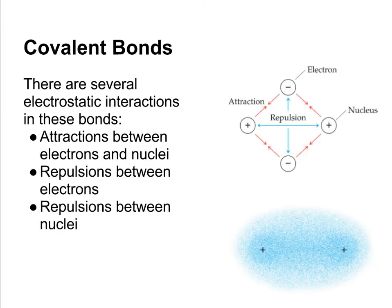Moving on to covalent bonds, there are several electrostatic interactions going on. In this representation, we've got two atoms that are starting to bond together. We have to deal with the attraction between electrons and the nuclei. The nucleus is positive, electrons are negative, so they're attracted to each other. And we also have to deal with repulsive forces.